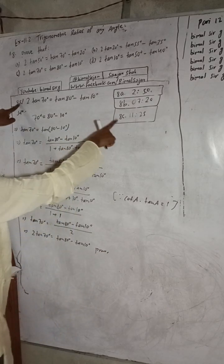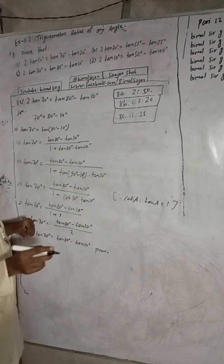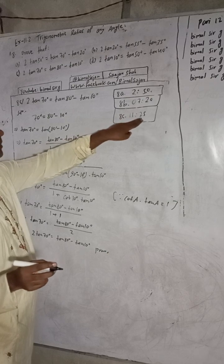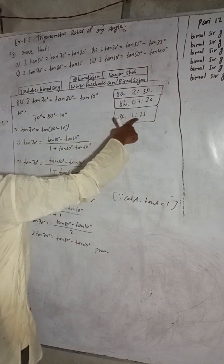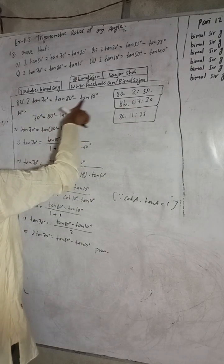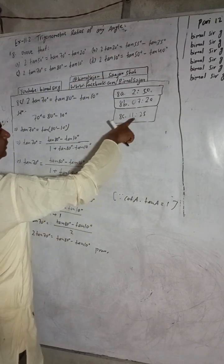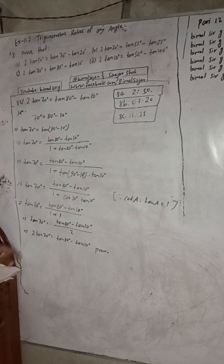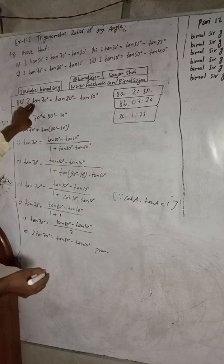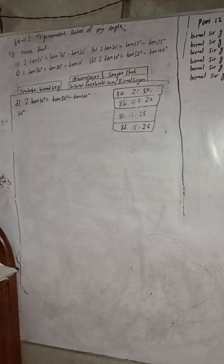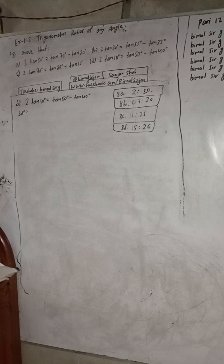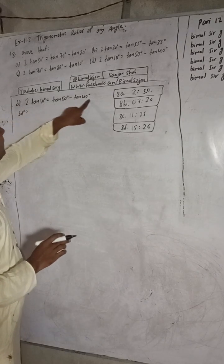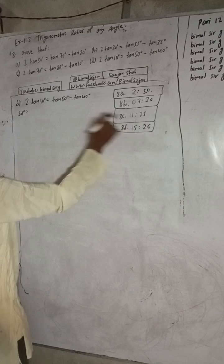The time stamp for question 8c is 11 minutes 25 seconds. If any subscriber or viewer comments this timestamp, anyone clicking it will directly jump to this question without seeing parts 1 and 2. So comment there to save my time so I can make more videos. Now question 8d: 2·tan10° = tan50° − tan40°. The time stamp for this question is 15 minutes 26 seconds.